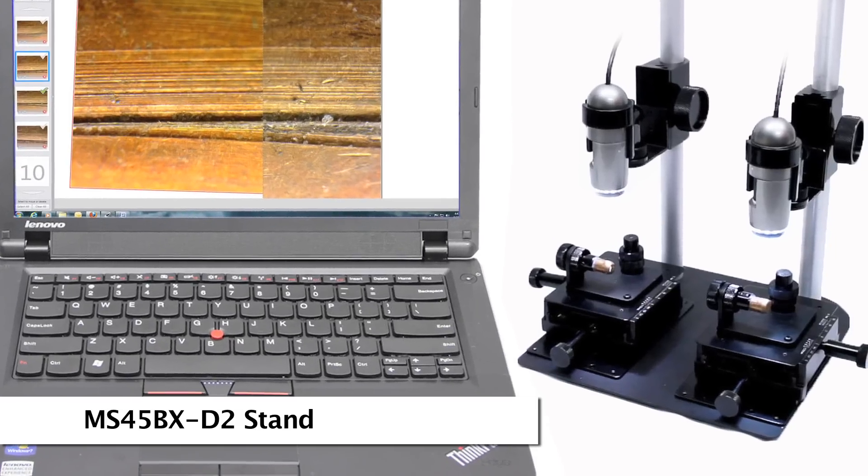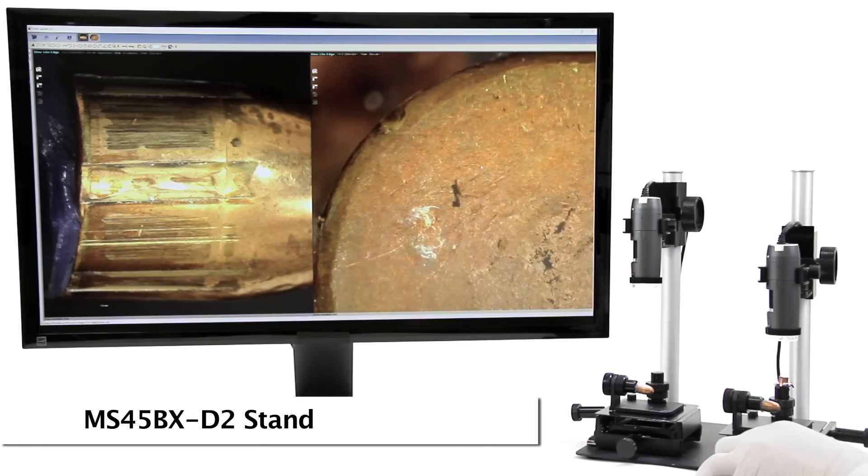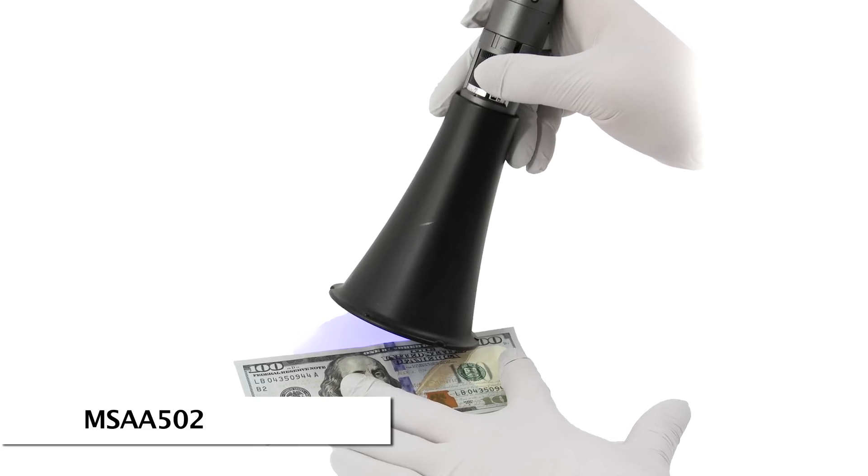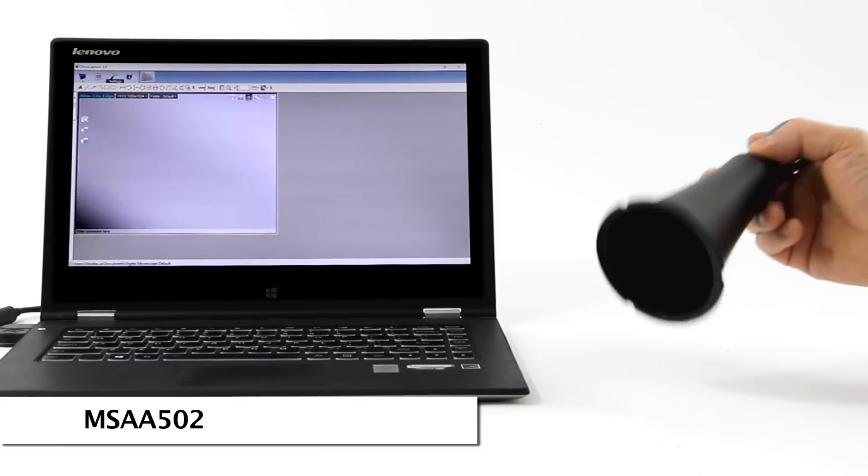The MS45BX-D2 allows for dual microscope comparison. The MSAA502 is great for fluorescence models to help remove outside lighting.